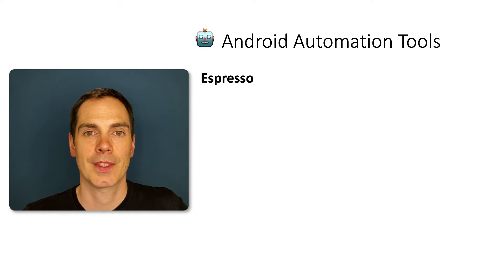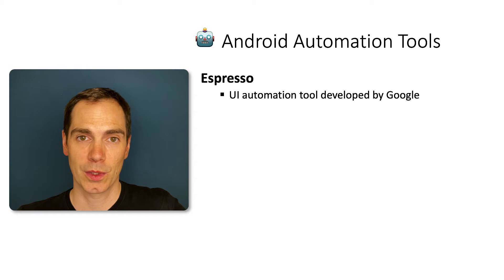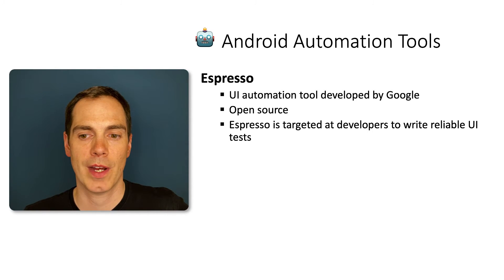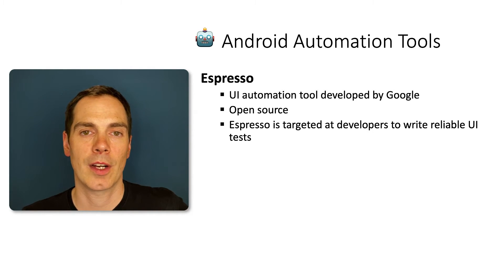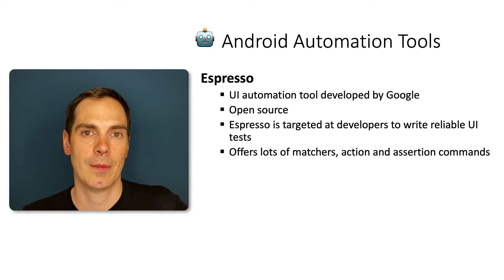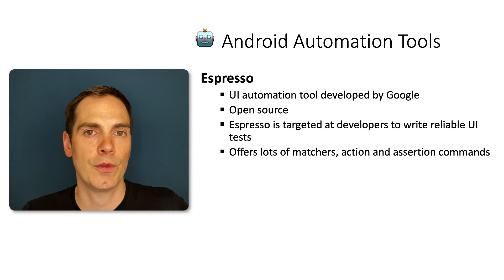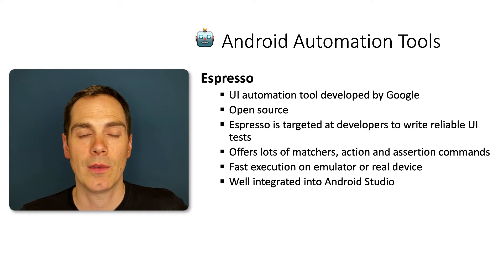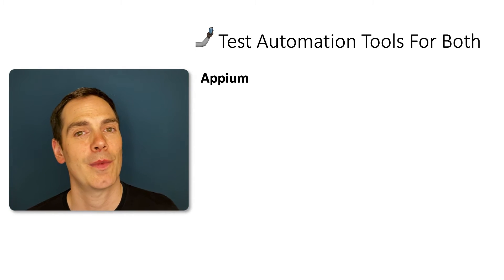Espresso is a UI automation tool developed by Google and provided to the community as an open source framework. It completely targets developers for writing reliable UI tests — it's very developer-centric and therefore well accepted by developers. It offers lots of matchers, actions, and assertion commands to check the current view. It has fast execution on emulators and real devices and is very well integrated into Android Studio.